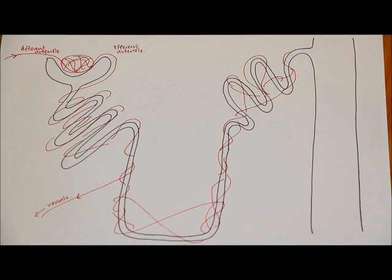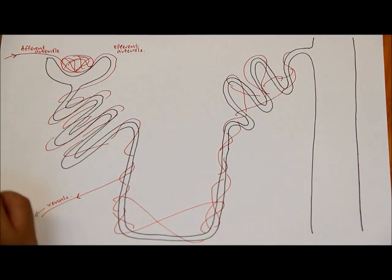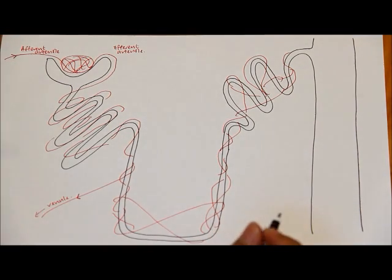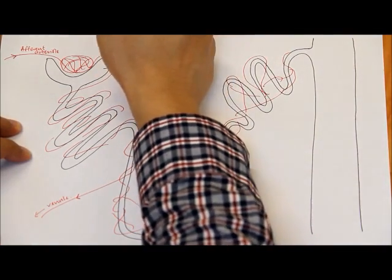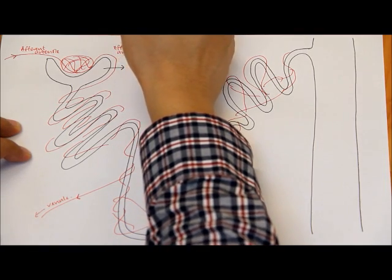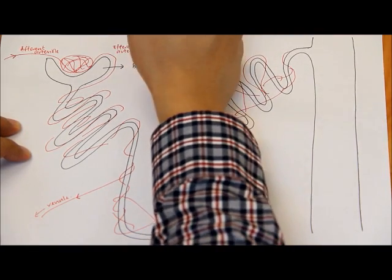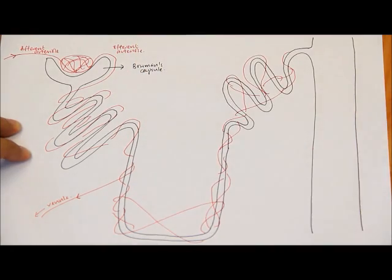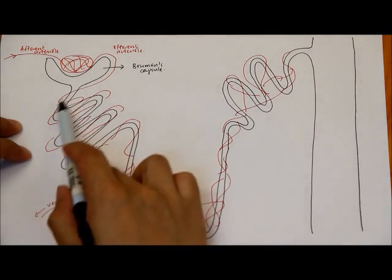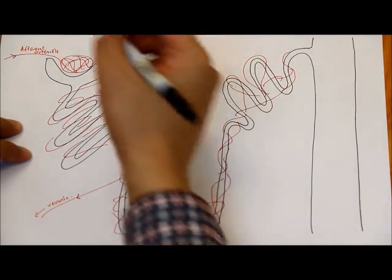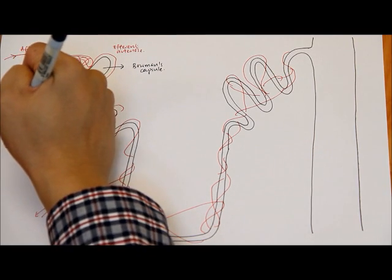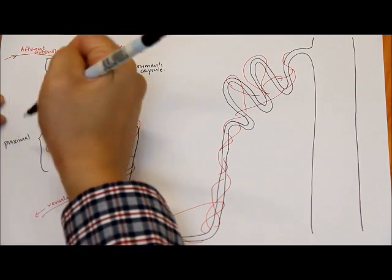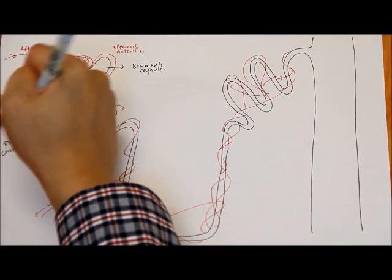When the arteries enter the nephrons, the first structure they will encounter is the Bowman's capsule. Moving on from the Bowman's capsule is the next structure, and this whole region will be called the proximal convoluted tubule.